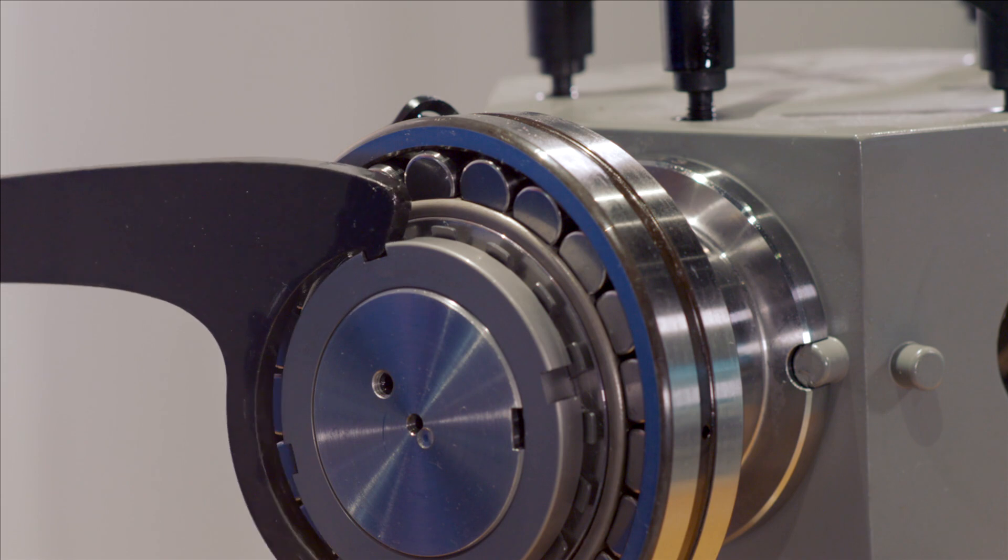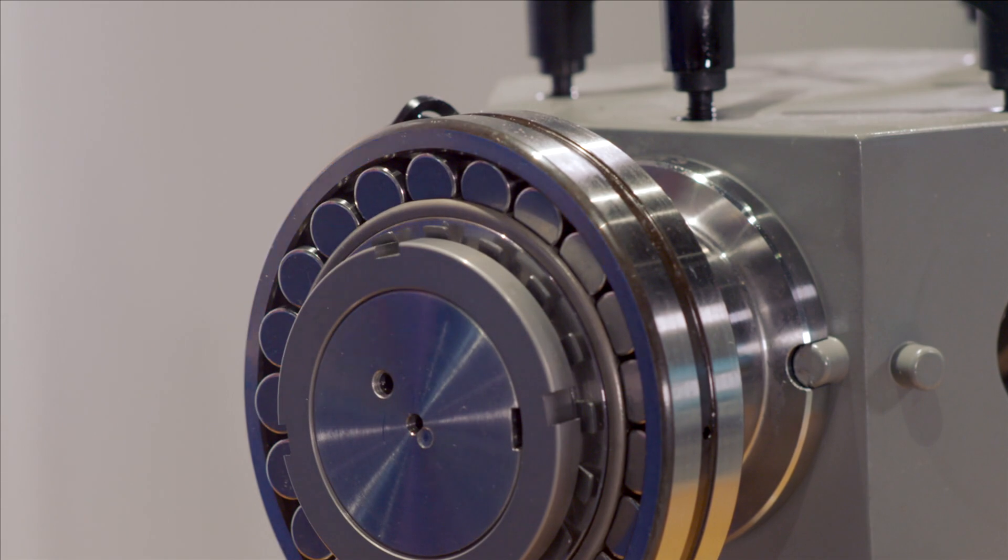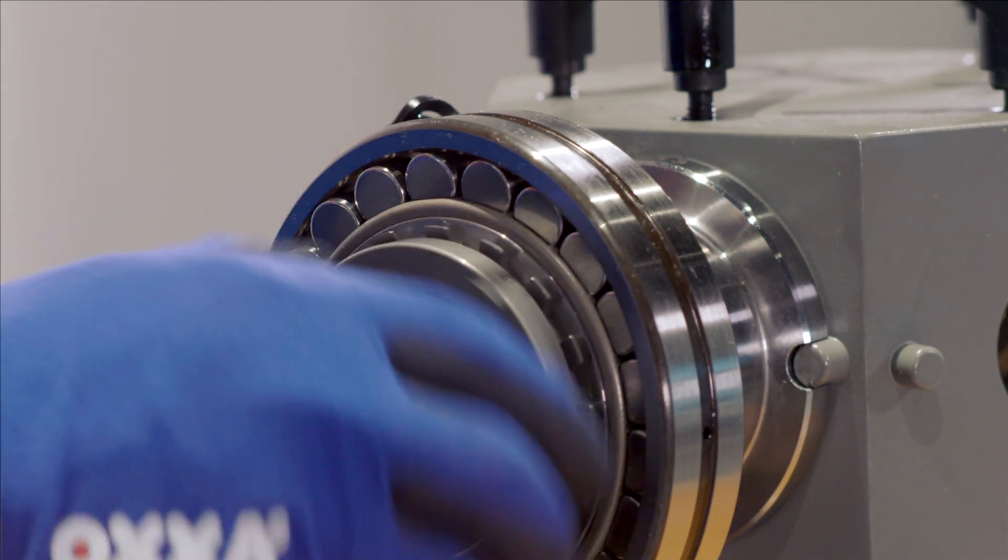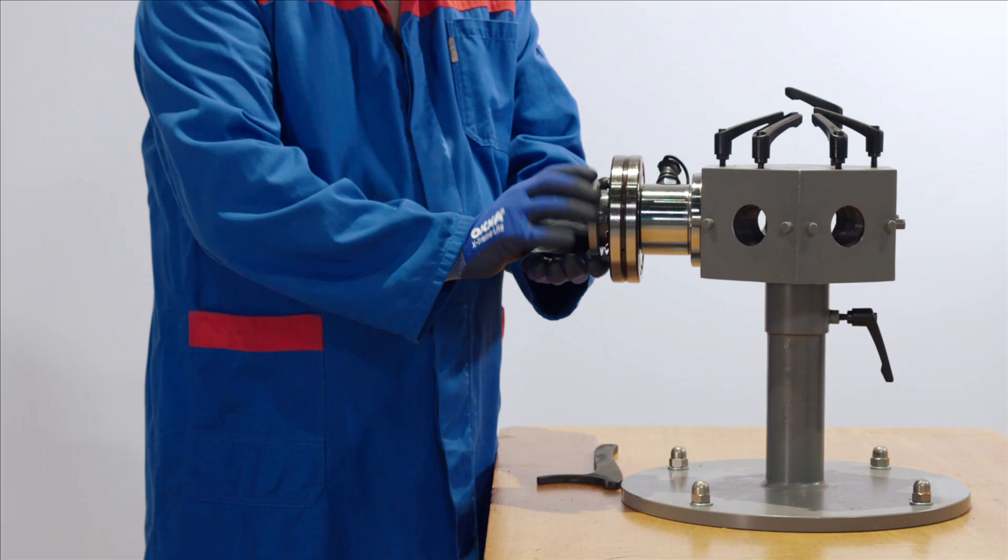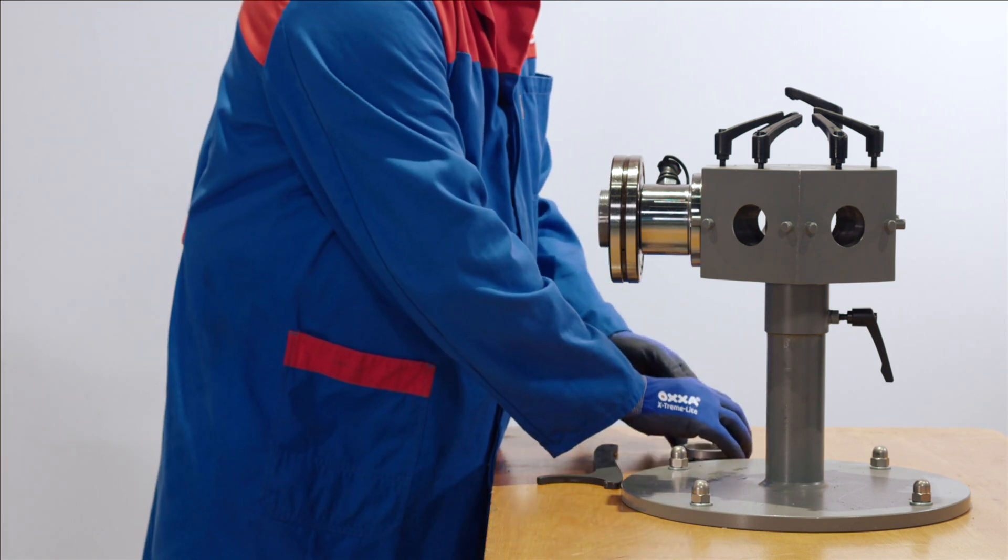Dismounting a spherical roller bearing with a cylindrical bore can be greatly assisted if the shaft is prepared for oil injection. In this case, a combination of mechanical and oil injection dismounting techniques is used.